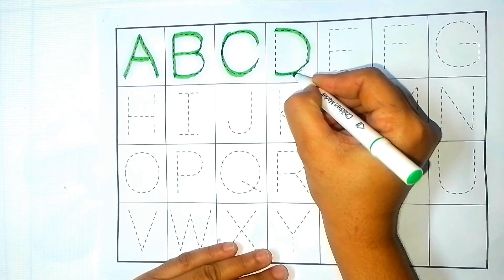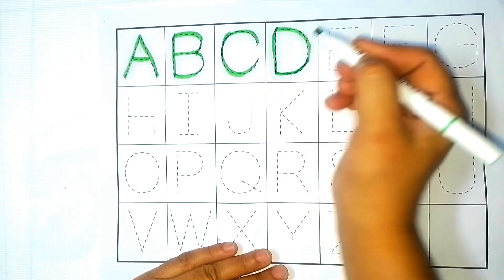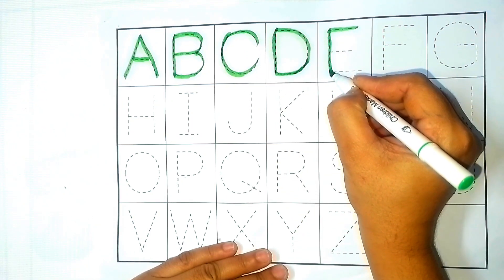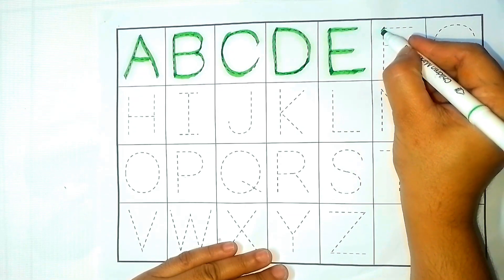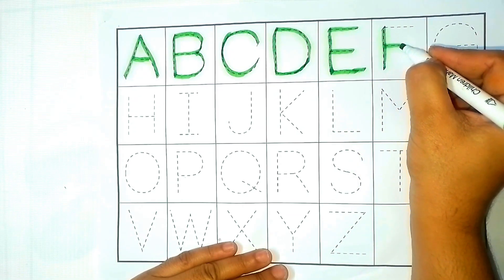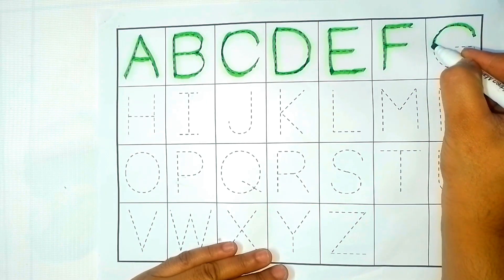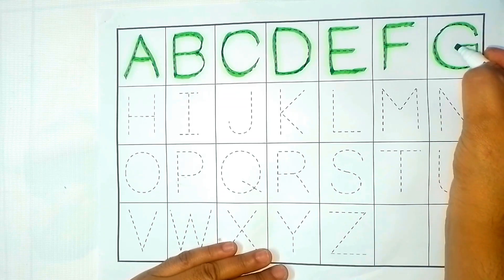D, D is for duck. E, E is for elephant. F, F is for fish. G, G is for goat.